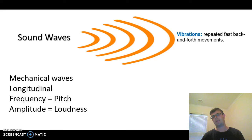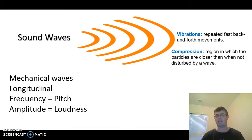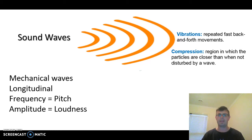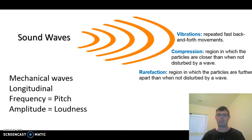Some more definitions you're going to have to know. A vibration is repeated fast back-and-forth movements, and is how sound is made. A compression is a region in which the particles are closer together than when not disturbed by a wave — they get closer together and move along the wave in that pattern. A rarefaction is a region in which the particles are further apart than when not disturbed by a wave. We'll look at that in the next couple of slides.